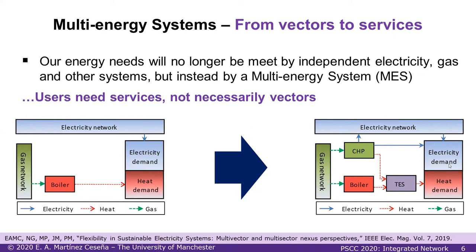Once we change from the philosophy of 'they use vectors' to 'they need services,' we start thinking: they don't want electricity — what they want is lighting, the ability to cook, transport, and so forth. The customers don't necessarily care where that energy is coming from, as long as the service is cheap and sustainable. So the moment we decouple the vector from the service, we can think: if it's not only electricity, if it's not only gas, if it's not only the heat network, then we are not bound to solve our environmental targets with just a single network.